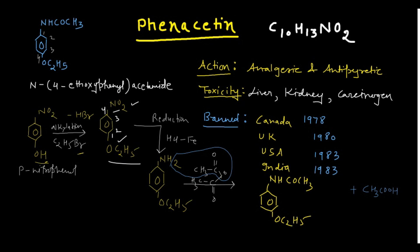For your information, if someone consumed high doses of phenacetin — though it is banned — it can cause severe headache, leading to dizziness, and in extreme cases the patient can go into a coma. It is also renally toxic as already discussed. These are the key points to remember about phenacetin.